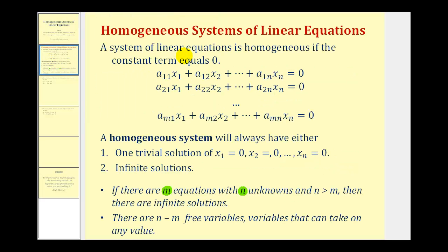A system of linear equations is homogeneous if the constant term equals zero, meaning the system must fit this form here. The main thing to remember is the constant term must be zero.